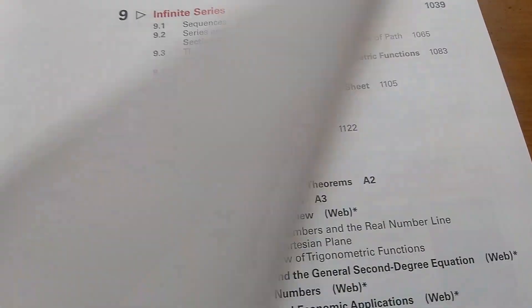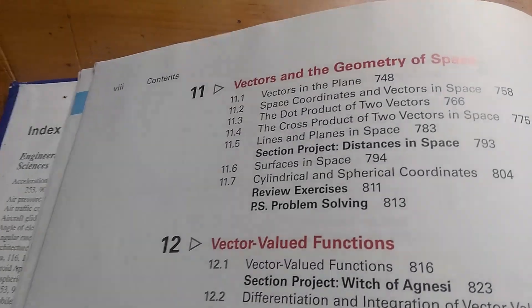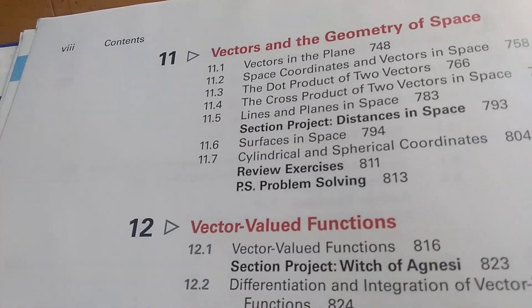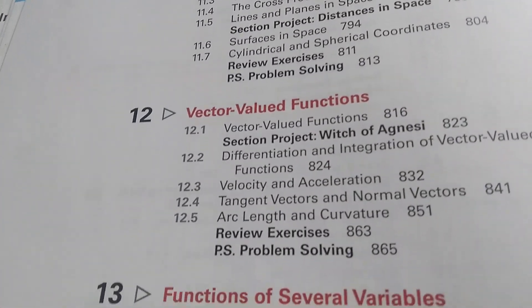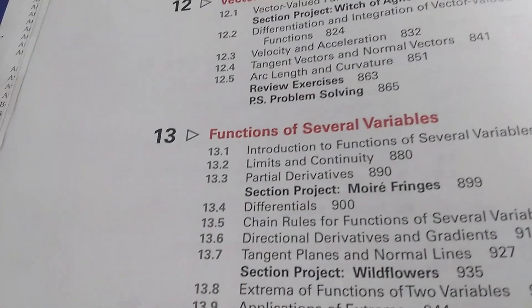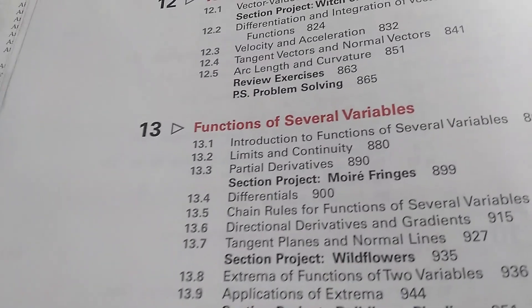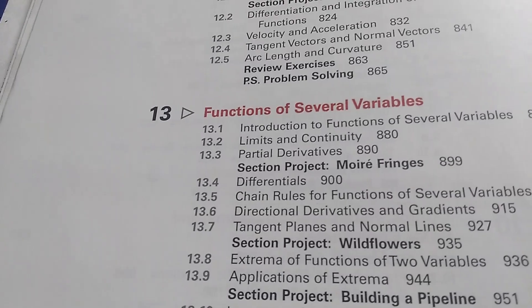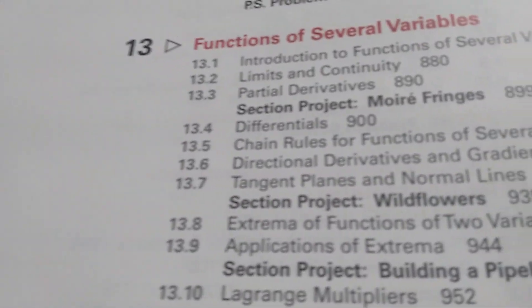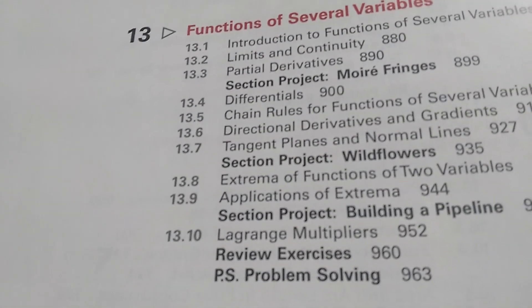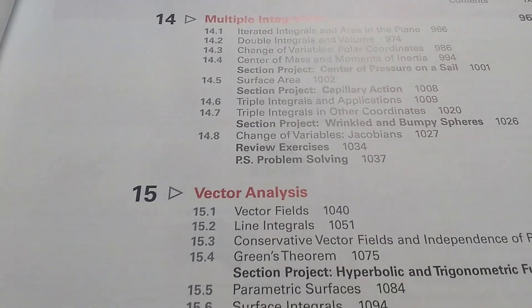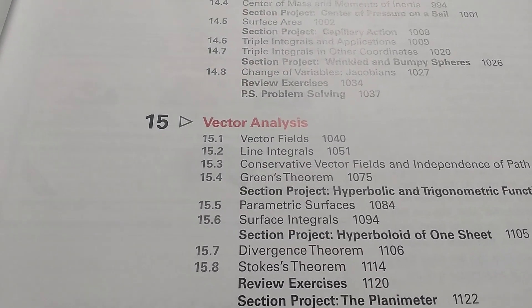Calc 3 starts in chapter 11 and goes on through the rest of the book. So 11 is all like vectors and stuff like that. 12 is vector-valued functions. In chapter 13, you go into functions of more than one variable. So you talk about partial derivatives, directional derivatives, the gradient, the second partials test—that's in 13.8—and Lagrange multipliers. Chapter 14 goes into multiple integrals, double and triple. And then 15 is vector analysis.